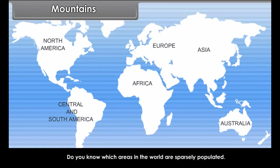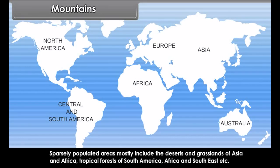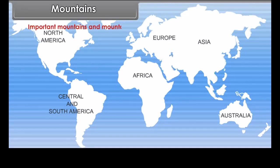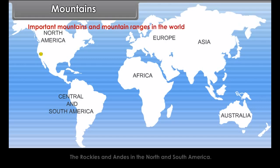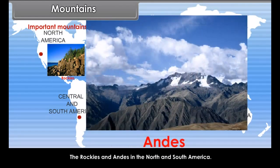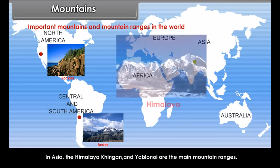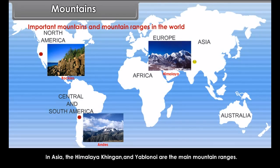Sparsely populated areas mostly include the deserts and grasslands of Asia and Africa, tropical forests of South America, Africa and Southeast, etc. Some of the important mountains and mountain ranges in the world are the Rockies and Andes in North and South America. In Asia, the Himalaya, Kingan and Yablone are the main mountain ranges.